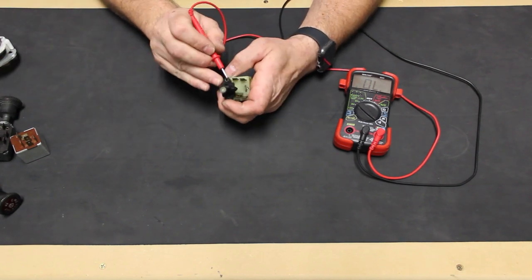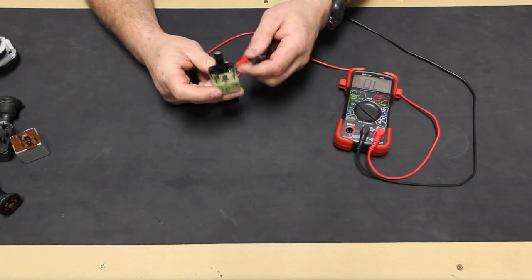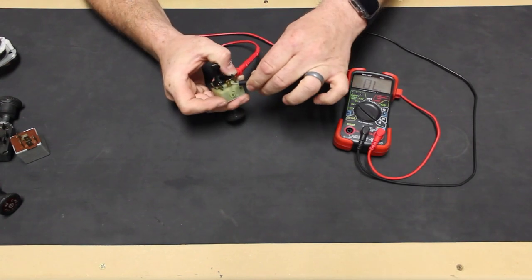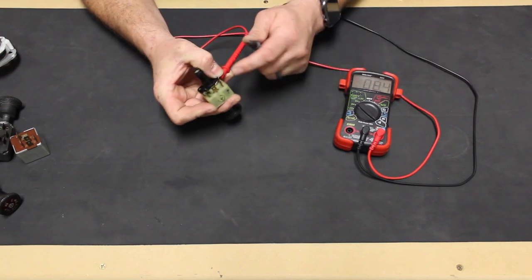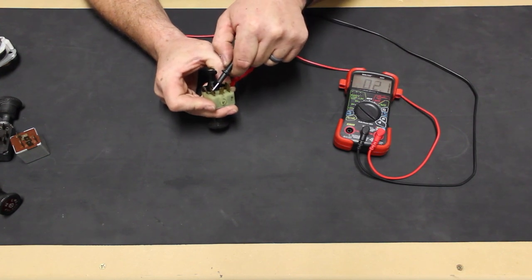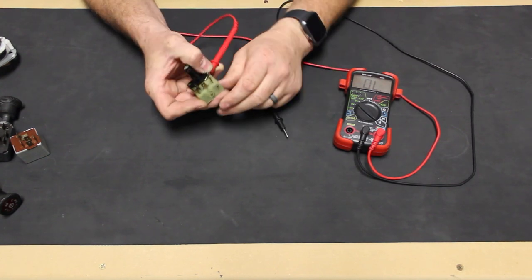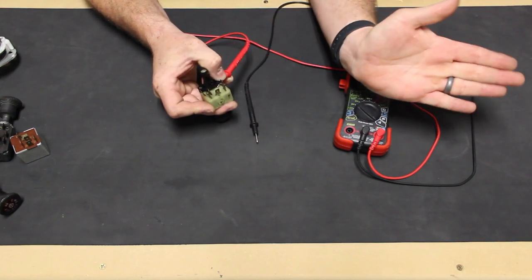To test the switch, we'll put one lead of the meter on the 30 terminal and with the switch turned to the off position, we can check the 53 terminals with the other lead. We see that the 53A terminal has continuity at the off position as it should. This is so that when we turn the wiper switch off, the wiper motor has the power to move the arms to the parked position on the windshield.